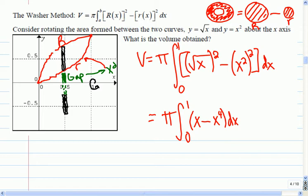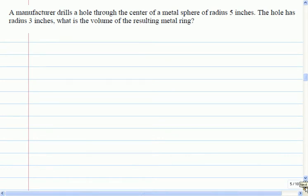Okay, so I'm going to leave you with the washer method question to try. There's no setup here, so there's no graphs. This question is, a manufacturer has a metal sphere, and you drill a hole through the sphere. So when we drill that hole through, what is the volume of the resulting ring?